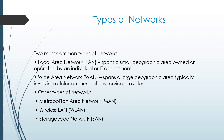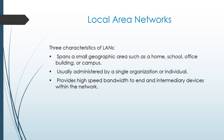The most common type of network is the Local Area Network (LAN), which spans a small geographic area. A LAN spans a small geographic area such as a home, school, office building, or campus, and is usually administered by a single organization or individual. It provides high-speed bandwidth to end devices and intermediary devices within the network.